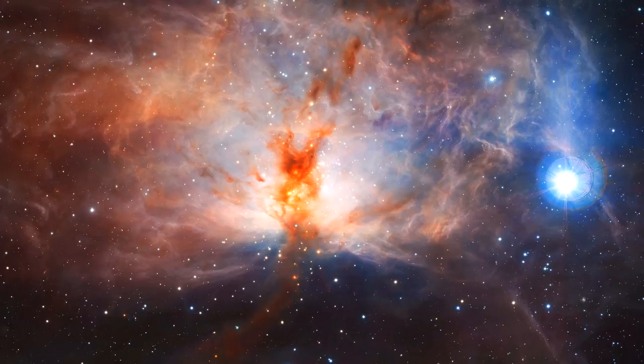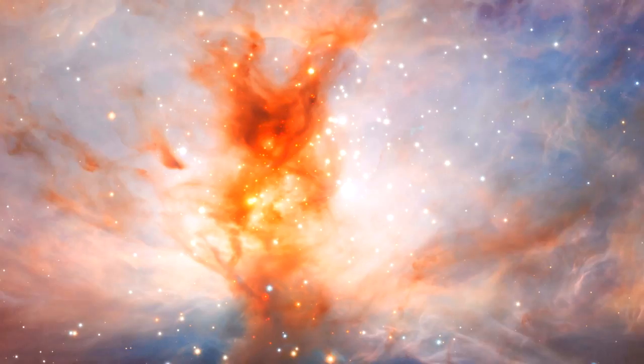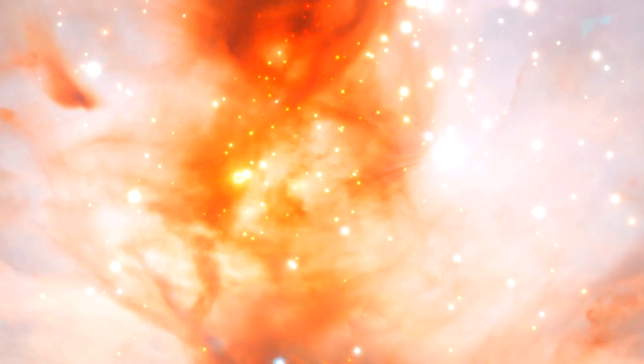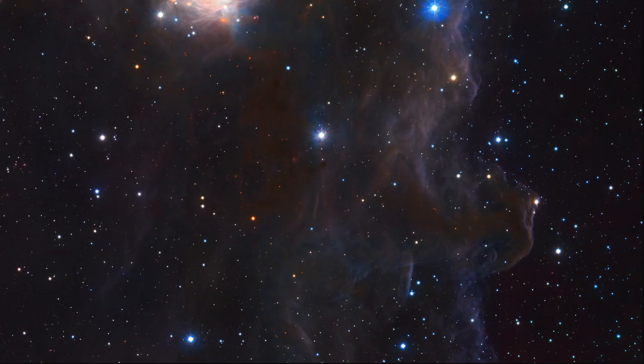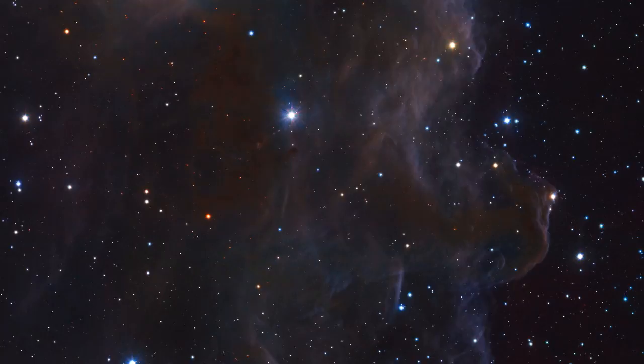One of the first VISTA images released shows the Flame Nebula, a spectacular region of gas and dust where stars are being formed. VISTA's infrared eyes can see through the dust and reveal the cluster of hot, young stars in the heart of the cloud. At the bottom of the wide VISTA field of view, the ghostly form of the Horsehead Nebula is faintly visible.